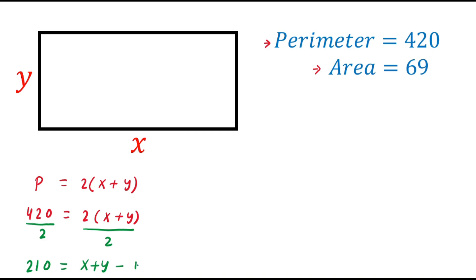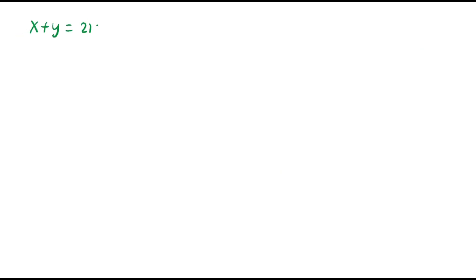Let us consider this as equation number one. The area of a rectangle is length times breadth, and the area is 69, so this is equal to x times y. Let us consider this as equation number two. So equation one is x plus y equals 210, and equation two is x times y equals 69.